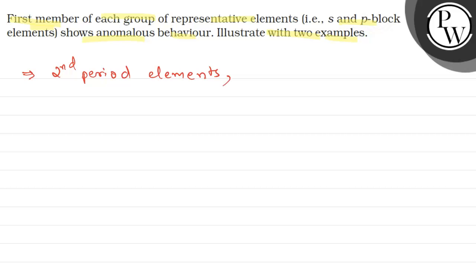Second period elements show anomalous behavior, and this is attributed to their small size. The reason behind this is the small size of the first member of the group.